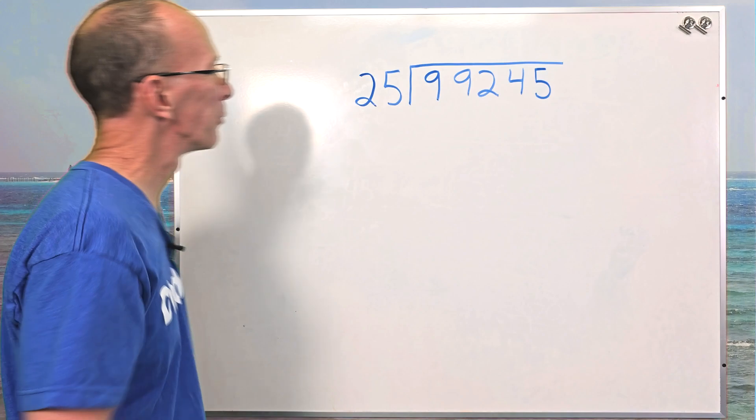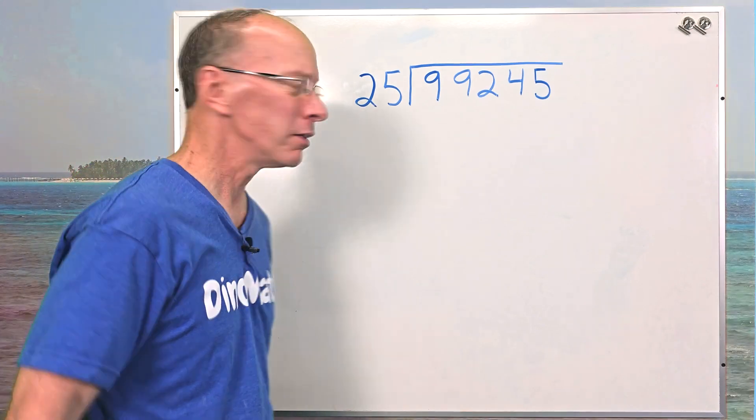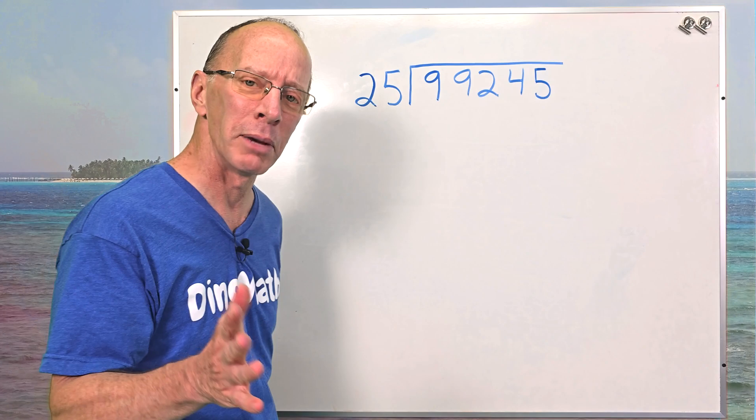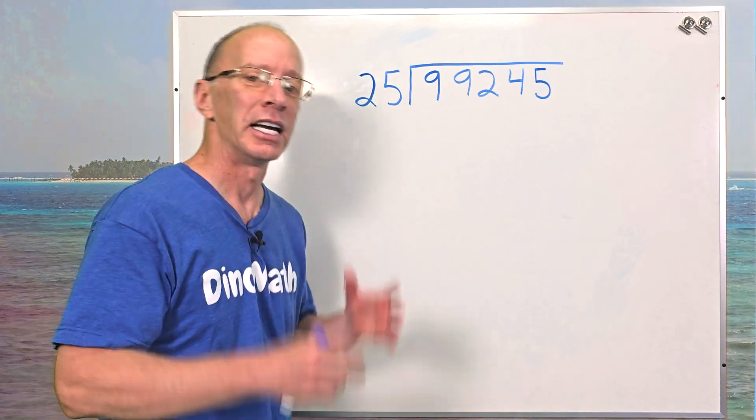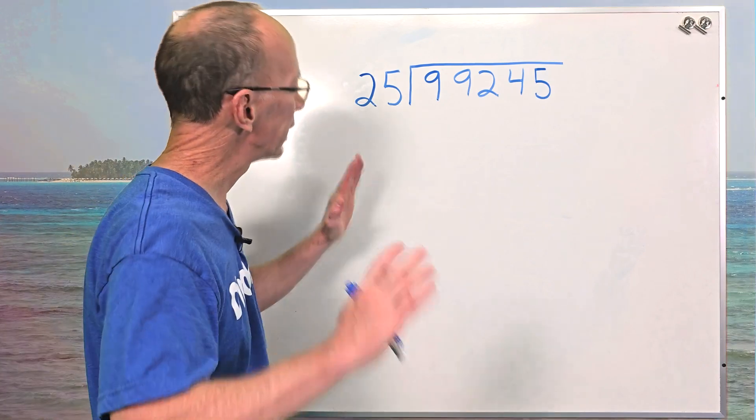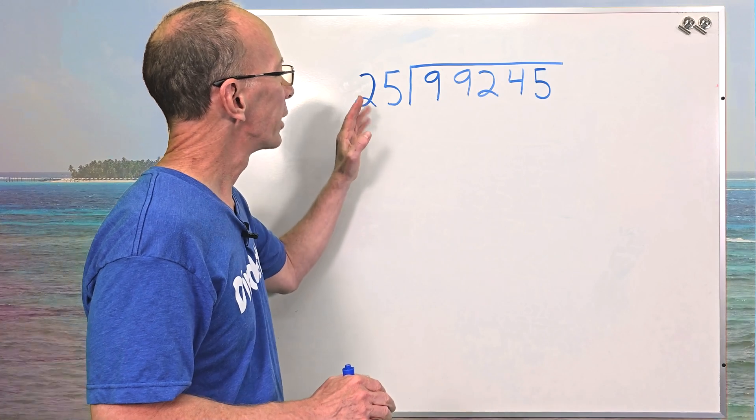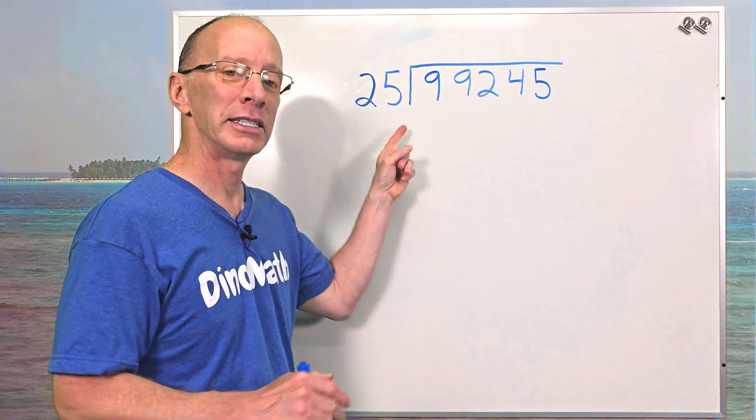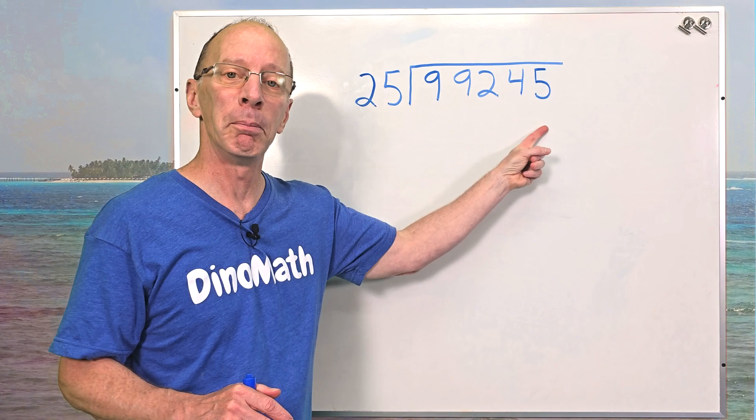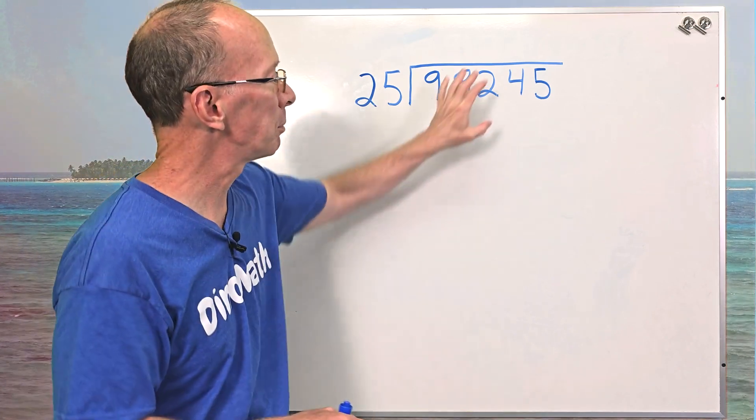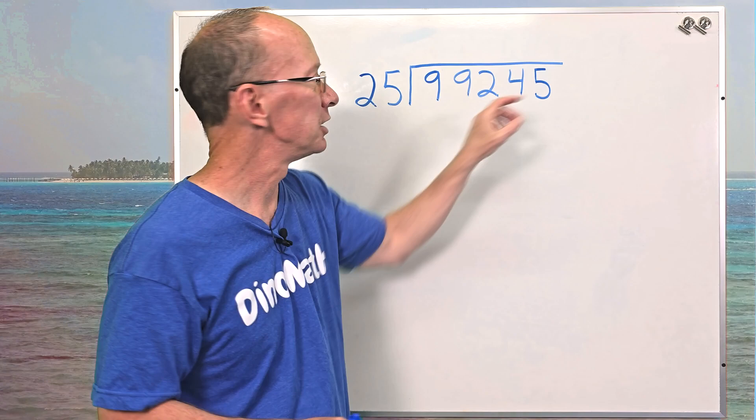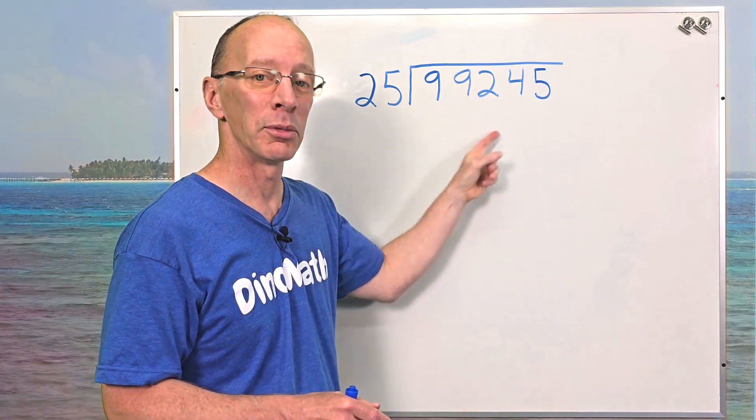So all right, let's get right into this. When we do a big problem like that, don't worry about it. Take it easy, cheesy, lemon squeezy. Just take it slow. We got 25. We got to figure out how many times 25 goes into this big number. Now, sometimes what I'll do is I'll take a piece of paper and I'll cover up these numbers and just work on one number at a time.